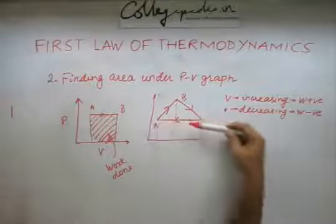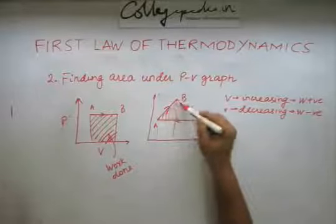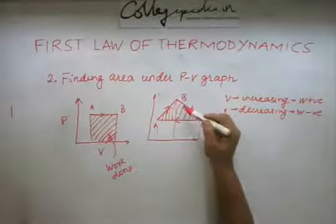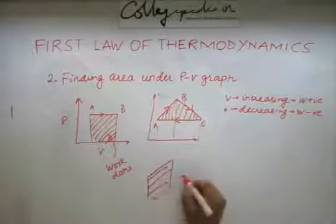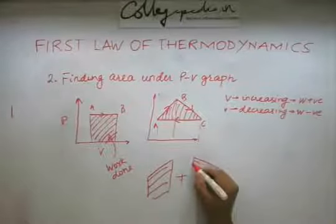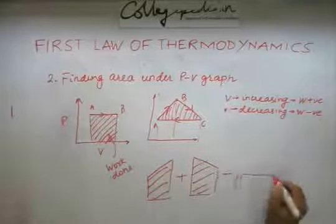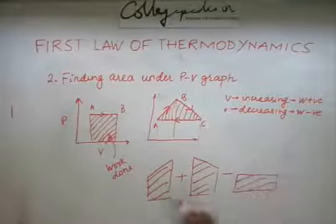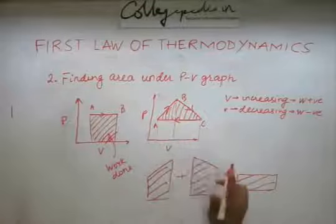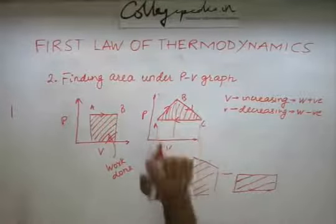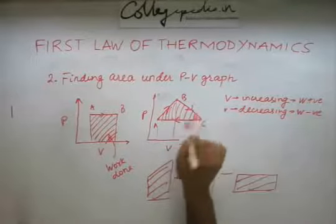And now you are going in the opposite direction because now the volume is decreasing. So minus this area. This is the first area, plus the second area, minus the area enclosed by this kind of a structure. This is positive because the volume is increasing. This is again positive because the volume is again increasing. But this is negative because now the volume is decreasing. So you have to subtract this area. So in totality, you are going to get area enclosed by this triangle.